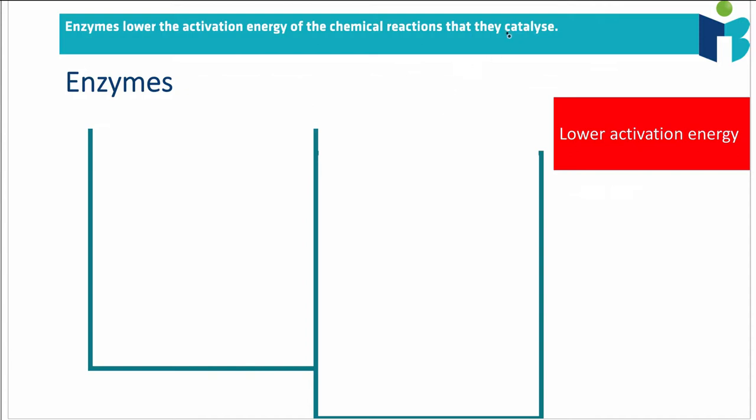So when you catalyze something, what you're doing is that you're speeding it up. You're speeding up a reaction. So when A converts into B using B-ase, it doesn't mean that this reaction would never have happened otherwise. It's just that A-ase speeds up how quickly A can turn into B. And they do this by lowering the activation energy. So we're just going to have a look at what exactly activation energy is.